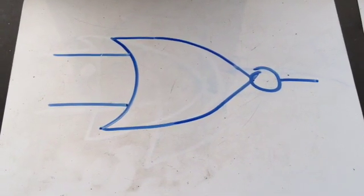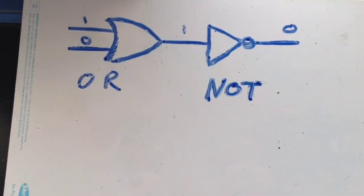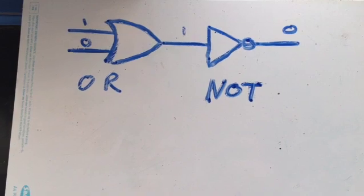In this simple explanation we will explain what a NOR gate is and how it works. The NOR gate consists of two gates, the OR gate and the NOT gate.